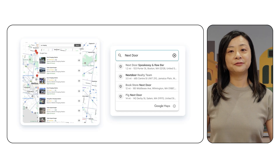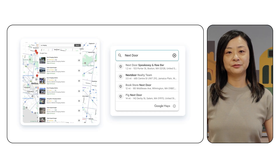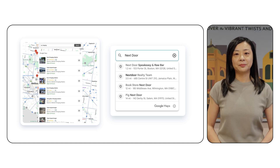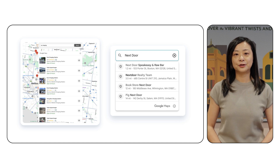Imagine your users effortlessly searching for any place in the world directly within your app's interface. The Places Search UI component enables you to surface nearby places categorically or through free text search, with complete UI components to help your users quickly and accurately find a relevant place. And the best part — it's incredibly easy to integrate.